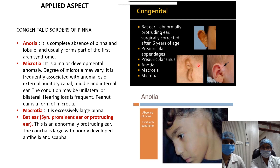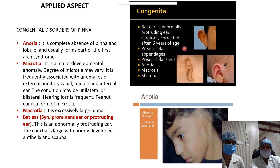Macrotia is an excessively large pinna relative to the face. Bat ear, also called prominent ear or protruding ear, is an abnormally protruding ear in which the antihelix and scapha are not properly developed and the concha is large.